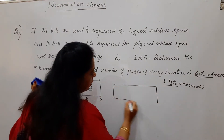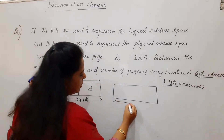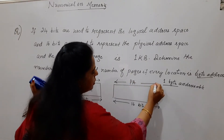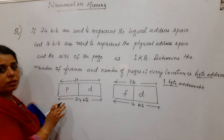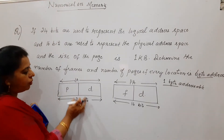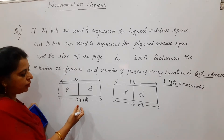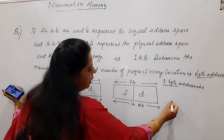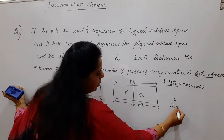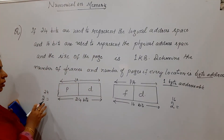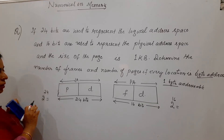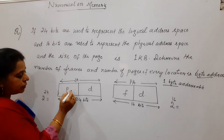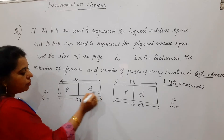What about the physical address space? 16 bits are used to represent the physical address space. If it is a physical address, you know it consists of 2 components: the frame number and the displacement. These things you have already learned in the previous session. If 24 bits are used, the total logical addresses can be determined by 2 to the power of 24, and the total physical address can be represented by 2 to the power of 16.